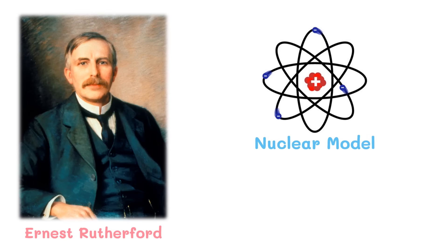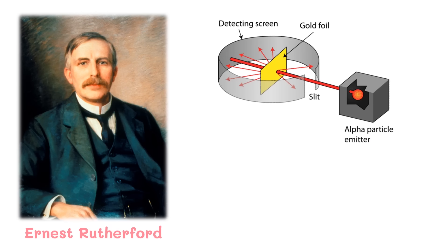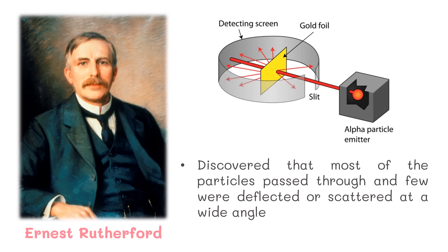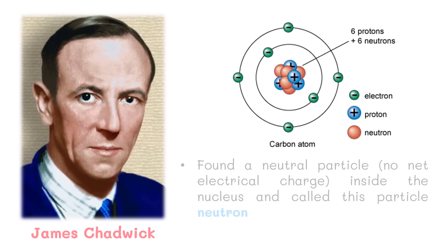In 1911, Ernest Rutherford discovered the nucleus of the atom using his alpha scattering experiment. He and his colleagues tested Thomson's theory using a very thin sheet of gold foil. They focused a stream of alpha particles and discovered that most of the particles passed through, while few were deflected or scattered at a wide angle, some at very large angles, and some bounced back to the source. After Rutherford's discovery, James Chadwick found a neutral particle with no net electrical charge inside the nucleus and called this particle the neutron.